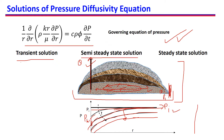In the third stage, we cannot decrease the pressure in the reservoir any further. We have reached a pressure at the well that we cannot decrease further, and so we will not be able to decrease pressure in the reservoir either. For what we do next, we will see in the next slide.